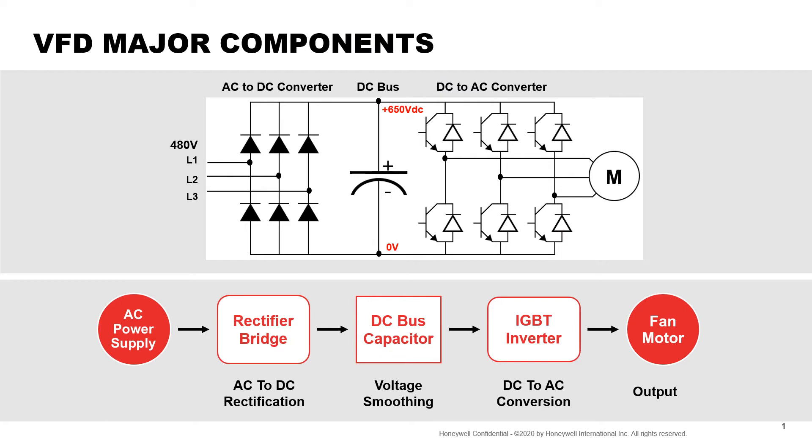VFDs have three subsystems: a rectifier, the DC bus, and the inverter. Supply power is usually three-phase, and the first component is the rectifier that converts the AC to DC. Next, the power goes to the capacitors in the DC bus. These smooth out ripples in the DC current. Lastly, transistors called IGBTs convert it back to AC, but in a way that allows us to choose a frequency. AC induction motors rotate at a speed that is proportional to the frequency of the electricity powering them. So when a VFD varies its frequency, it varies the speed of the motor. This allows us to drive the motor at different speeds.